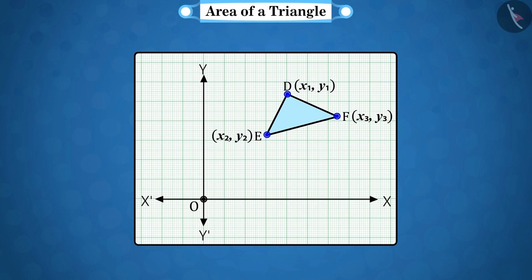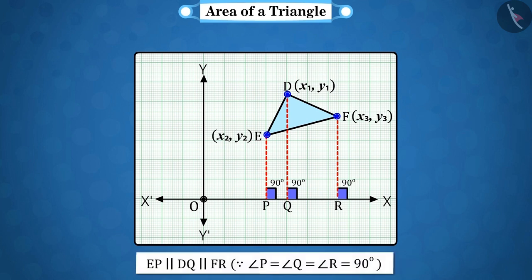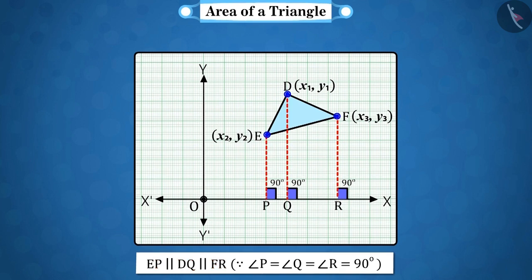From the points D, E and F, if perpendiculars DQ, EP and FR are drawn respectively to the x-axis, then it looks something like this. If we look at this figure carefully, then we find that the perpendicular EP is parallel to DQ and DQ is parallel to FR. That is, all the three perpendiculars are parallel to each other.